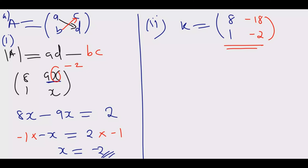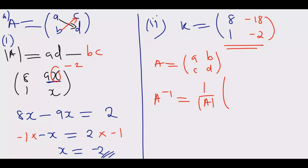Having found K, we need to find the inverse. I'll give you the generic formula so you understand the principle. For a matrix A with columns [a, b] and [c, d], the inverse A⁻¹ equals 1 over the determinant of A, multiplied by the matrix where we swap a and d — putting d where a was and a where d was — and negate the other two entries: minus b and minus c.